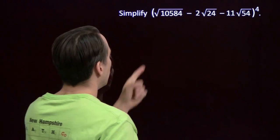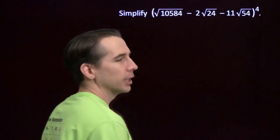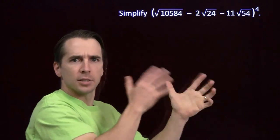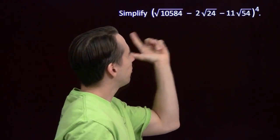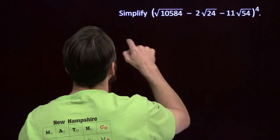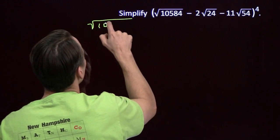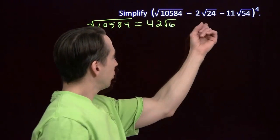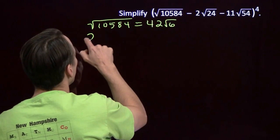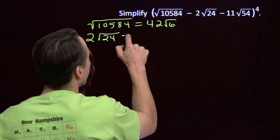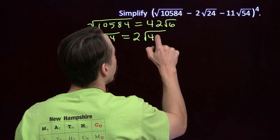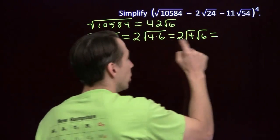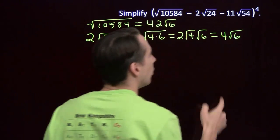Well, there's the square root of 10,584 again, so at least we'll make some use out of that last problem. I certainly don't want to just write out four copies of this and start multiplying them all together. So let's try simplifying these square roots and maybe something good will happen. We've already taken care of the first one — the square root of 10,584 is 42 times the square root of 6. Now let's check out 2 times the square root of 24. We see an easy perfect square factor: 24 is just 4 times 6. So this is 2 times the square root of 4 times the square root of 6. Square root of 4 is 2, 2 times 2 is 4. We get 4 times the square root of 6.